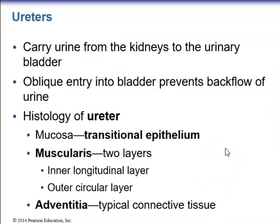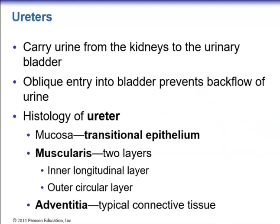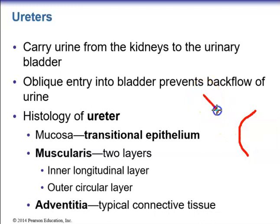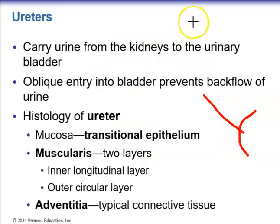The ureters — there are two, right and left — carry urine from the kidneys to the urinary bladder. They enter the bladder at an oblique angle, which prevents backflow of urine back up into the ureters.